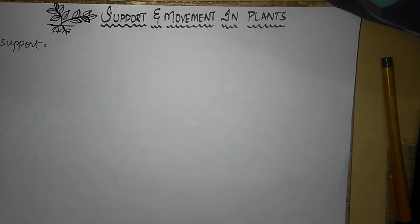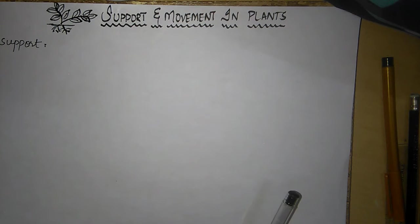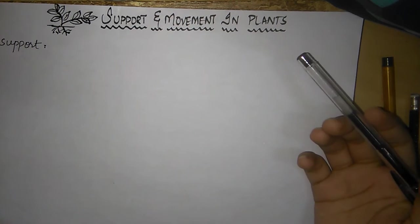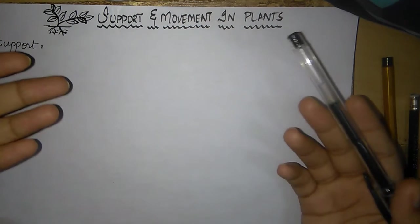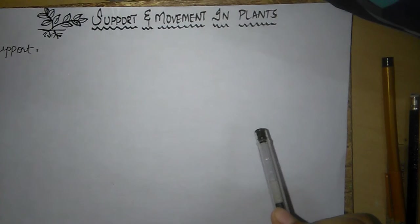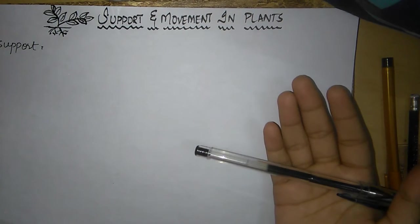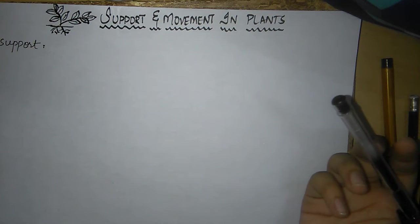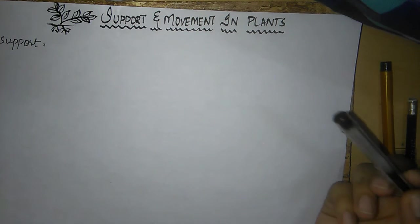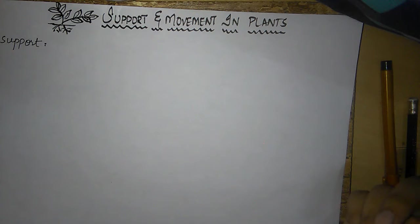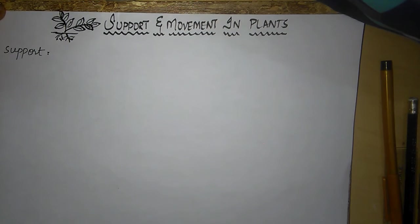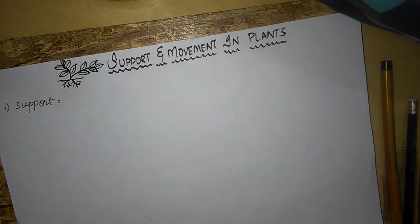Hi guys, today I'm going to teach you about support and movement in plants. Support can be defined as the ability which keeps an organism in equilibrium, maintains its shape, and helps in locomotion. In plants, support is provided by plant tissues — for example, non-living hard dead cells, which is sclerenchyma; living slightly thick-walled colenchyma; and parenchyma in the soft parts. There are three types of plant tissue.